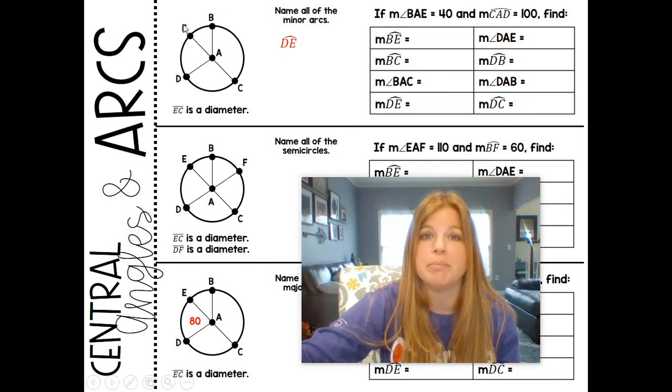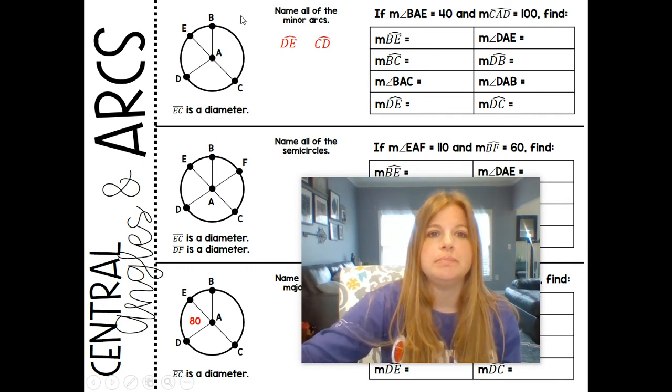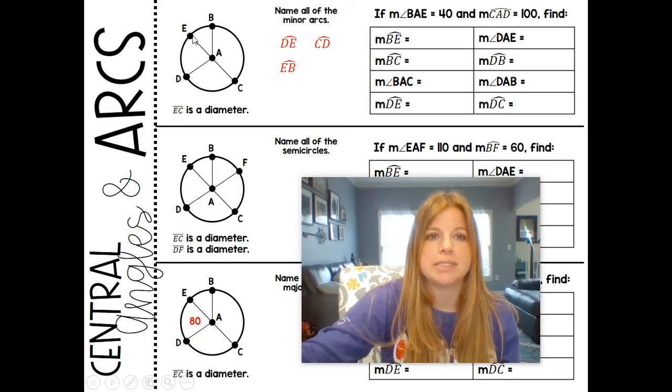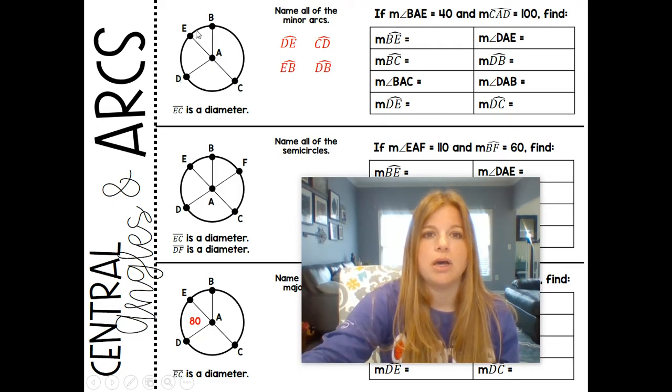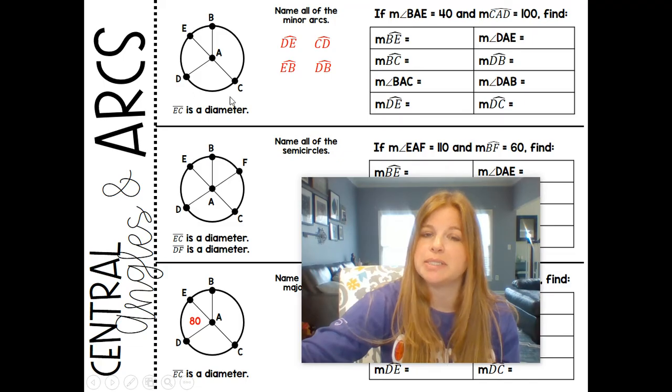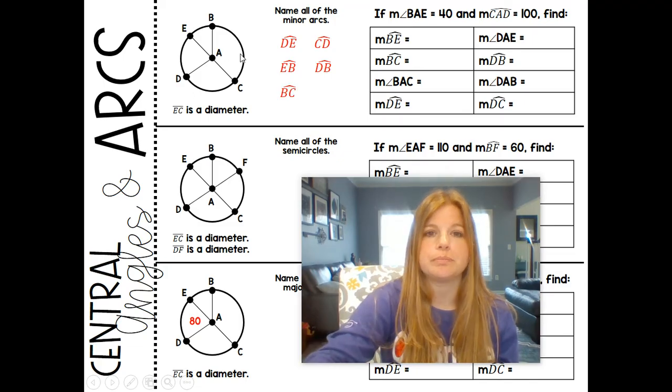Notice when I say DE, it's going this way and it's not going around. If it was going around, it would have to use three letters, DCE. And that's definitely a major arc, not a minor. CD. So from C to D. EB. It's a tiny little arc. Arc DB. So this one. The minor arc DB. If it's named with two letters, it means it's going this way and not this way because that would be greater. And BC. Awesome.